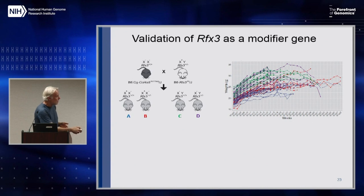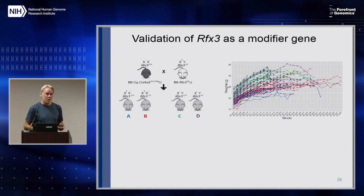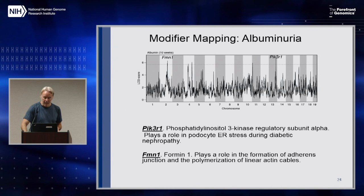We get females — all the mice have the Col4A5 mutation — we get females with and without the modifier, and males with and without the modifier. This is an ongoing experiment, but this group — females with the modifier — you can see them, they're living a long time. The group of males without the modifier are the ones that are dropping off fast. So there's a way to validate your modifier gene candidates.